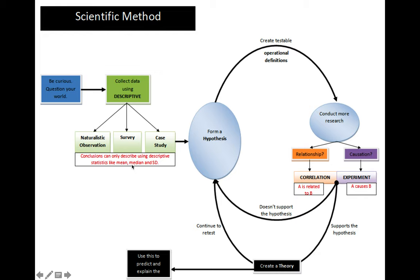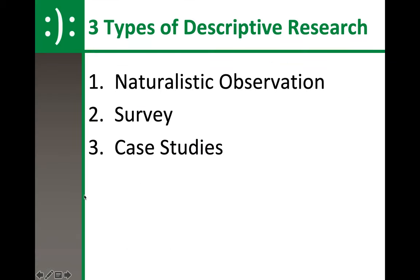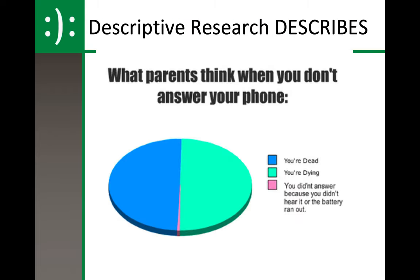Today we're going to be talking about these three: naturalistic observations, surveys, and case studies — and how we form a hypothesis, how we create testable operational definitions, what correlations are, what experiments are, and all of that. These are the three types of descriptive research we will go over.